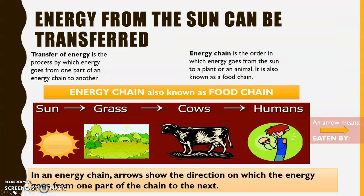All of this is called an energy transfer. The transfer of energy is the process by which energy goes from one part of an energy chain to another. An energy chain is the order in which energy goes from the sun to a plant or to an animal. It is also known as a food chain.